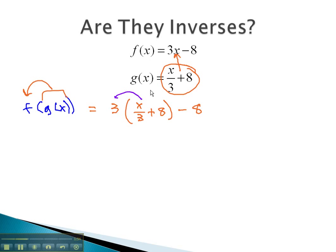Notice if we start by distributing, in the first term, the 3's divide out, leaving x, plus 3 times 8 is 24, minus 8. However, when we do 24 minus 8, we end up with x + 16, which is not x like we had hoped. Because we don't get x, we say these are not inverses.